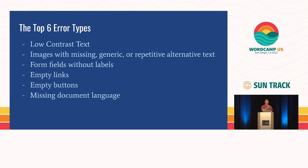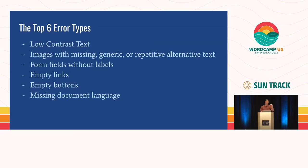Error number five — which is very rare in WordPress — is a missing document language. This is an attribute on the HTML element that simply says what language the page is in: Spanish, French, Japanese. That's critical for screen reader users because otherwise the screen reader reads it using the browser's or operating system's installation language. The pronunciation rules for Japanese are quite different from English, and mixing them doesn't work out well.